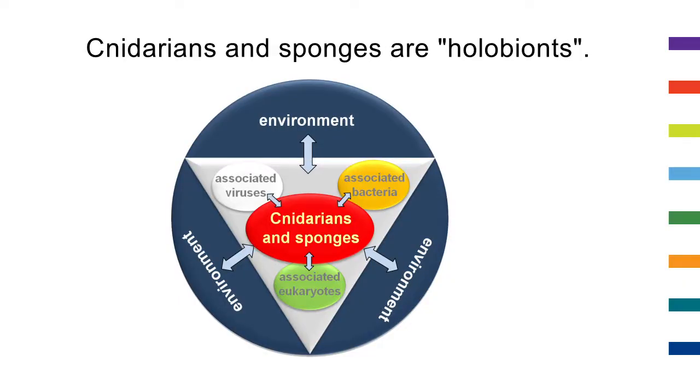We have learned in the last decade that there is a tremendous influence of these stable associated symbiotic partners on the host, and the phenotype is dependent on which partners you are associated with. There is convincing evidence, due to technical advances and large gene banks and genome projects, that the pathways for sensing and dealing with the environment are evolutionarily conserved.